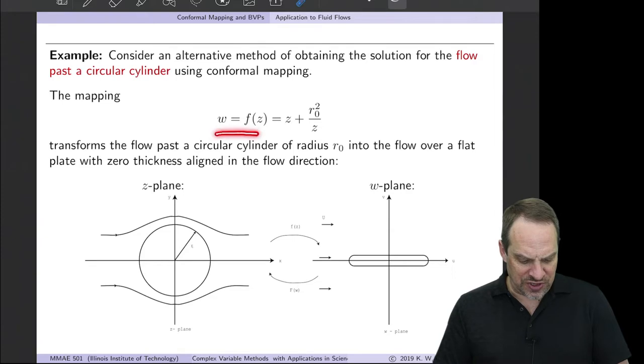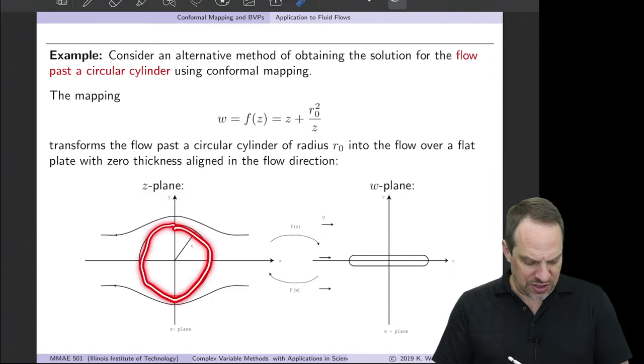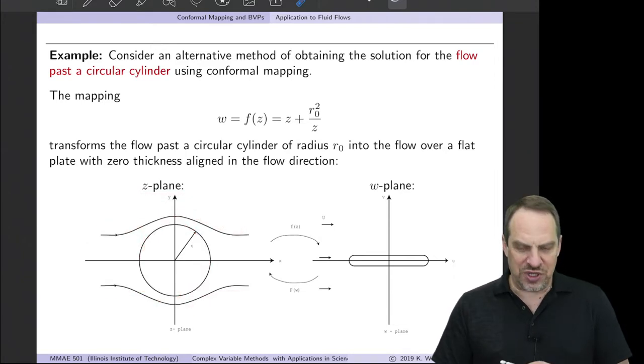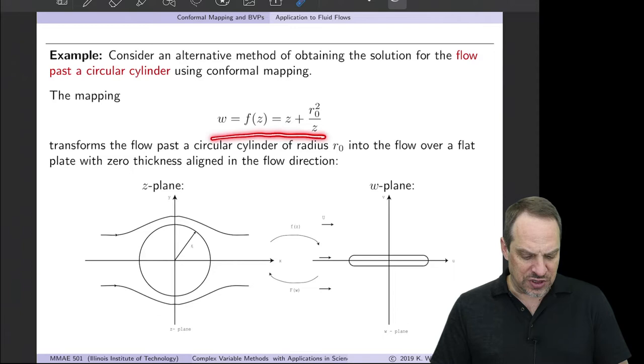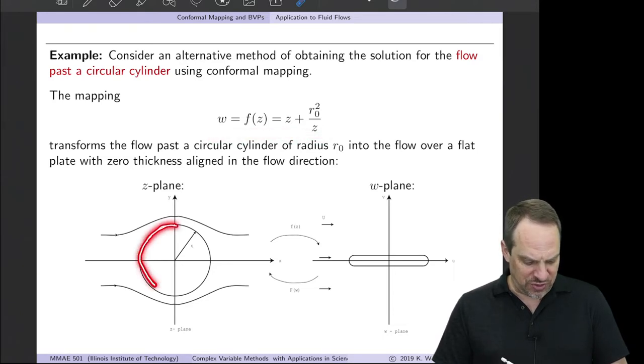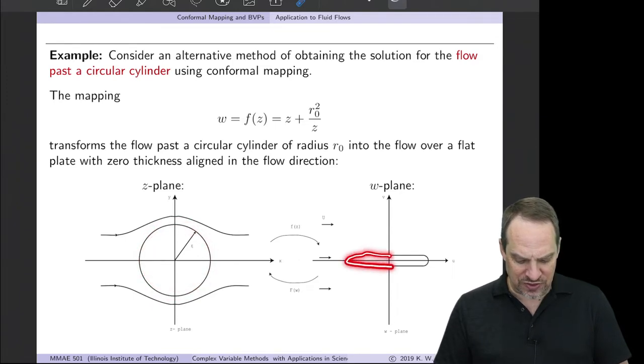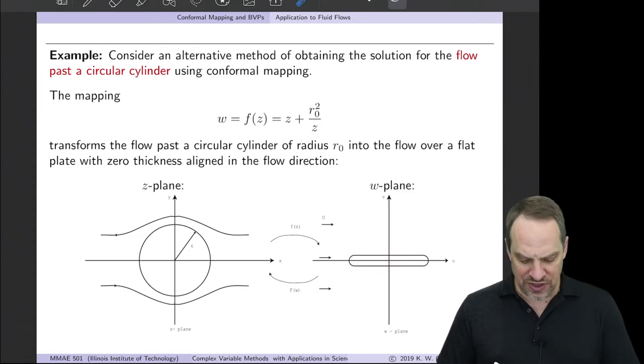So here's the mapping. W is f of z. It's z plus r₀² over z. r₀ here is the radius of our circular cylinder. So here's our flow in the z-plane. We have a circular cylinder, and we want to get the flow around it. So we need to map this. This is our problem. Can't solve it. So we need to map this into a simpler problem. Well, we can do that using this transformation, z plus r₀² over z. And if you look at what the image of this circle is, it turns out that it's this elongated shape here. It has actually infinitesimal thickness. I've drawn it with some thickness so you can see it, but it's actually infinitesimally thin.